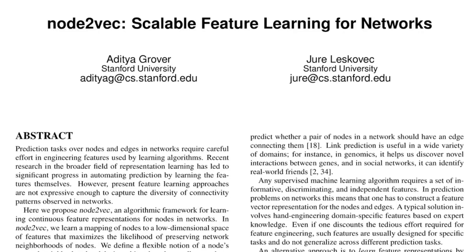Hi there, welcome to the new video. Today we'll be going through this very interesting paper titled Node2Vec: Scalable Feature Learning for Networks, from authors at Stanford University. This paper is one of the early works in machine learning with graphs. Like DeepWalk, which I explained earlier, it uses random walks to generate embeddings for every node in a graph.